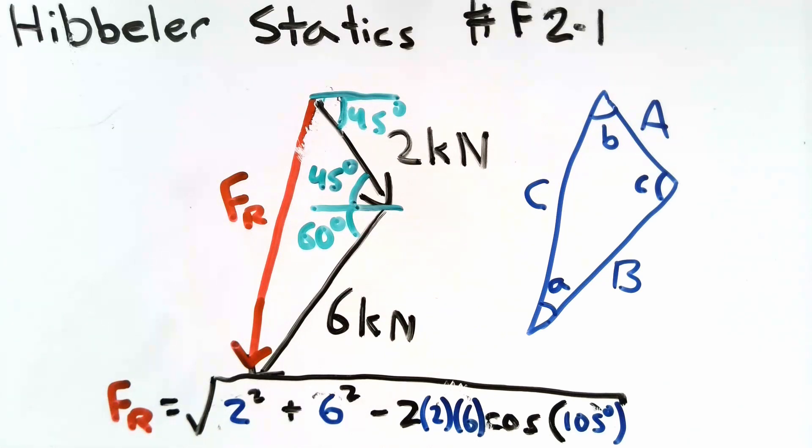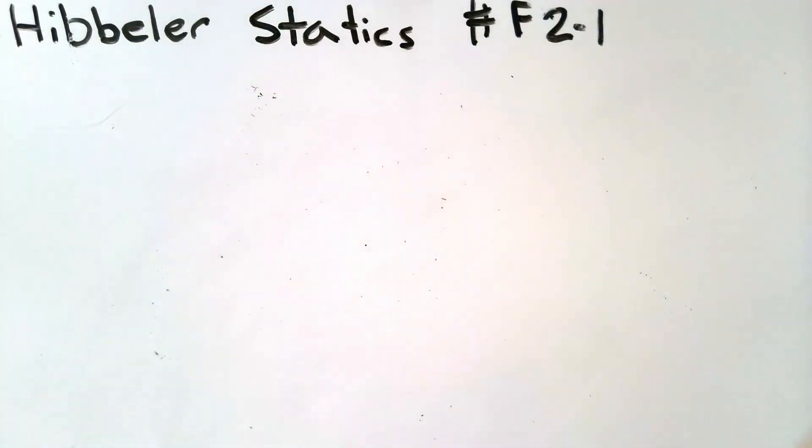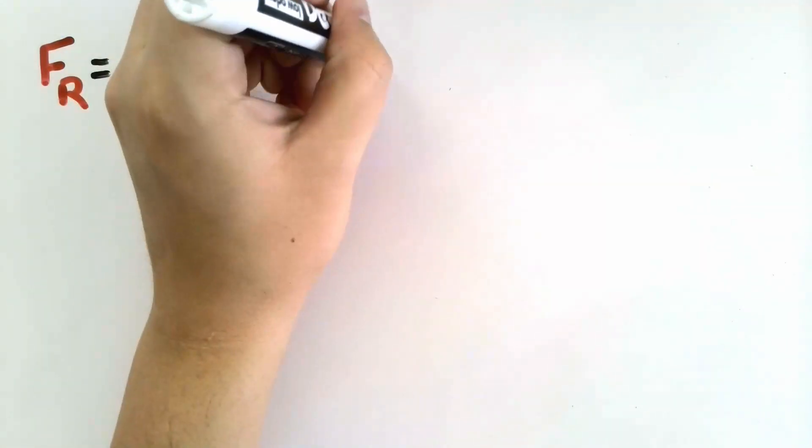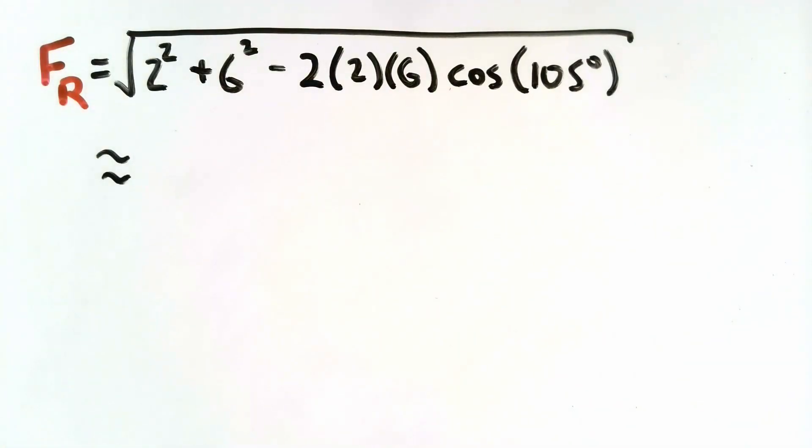Now all we have to do is plug in our numbers into our calculator and solve this problem. Remember that our angles are in degrees. So you may want to make sure that your calculator is set to solve for sines and cosines using degrees.